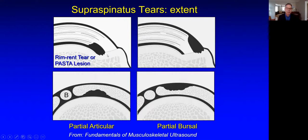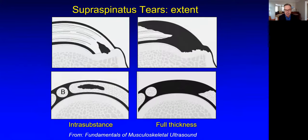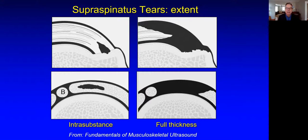In contrast, a bursal-sided partial thickness tear will be in contact with the bursal surface but not the articular surface. Note that it is in contact with the greater tuberosity surface, but it's not a full thickness tear because it does not connect from the bursal to the articular surface. Note again the cortical irregularity, an important indirect sign. You can have a tendon tear buried within the tendon or at the footprint touching the greater tuberosity, but not touching the articular or bursal surfaces. Then you have the full thickness tear, which goes from the bursal to the articular side, and it can be the entire width of the tendon or more focal.